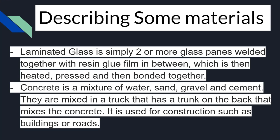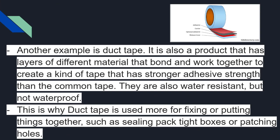Laminated glass is basically two sheets of glass welded together with a resin or glue film in between, then heated and pressed to bond them. Concrete is a mixture of water, sand, gravel, and cement, mixed in trucks and used to pour roads and bridges. Another example is duct tape — it requires high adhesive strength with other materials. Duct tape has multiple layers: the adhesive, the carrier, optional adhesive, and the release liner. It can be water resistant but not waterproof, and is used for fixing, sealing, or packing.